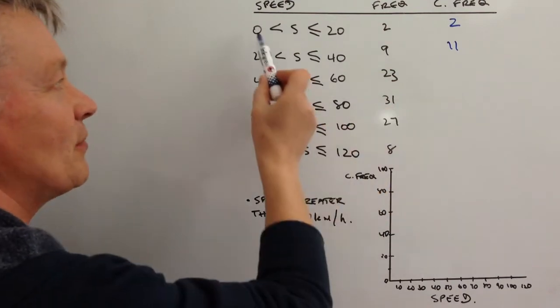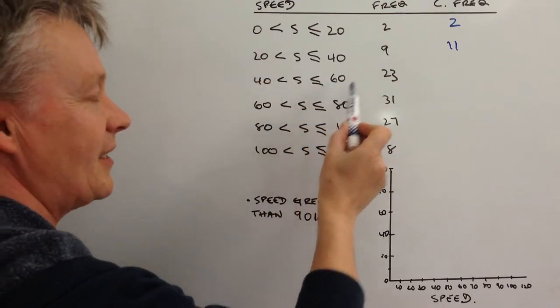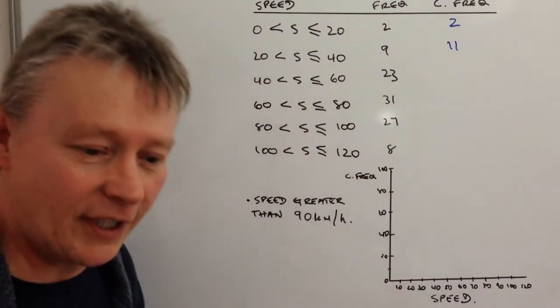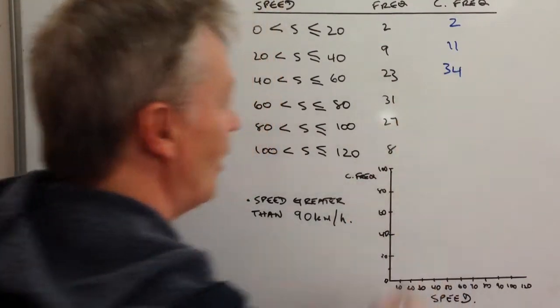And then the next group is between zero and 60. So if you add all of those up again, you're going to get 34.